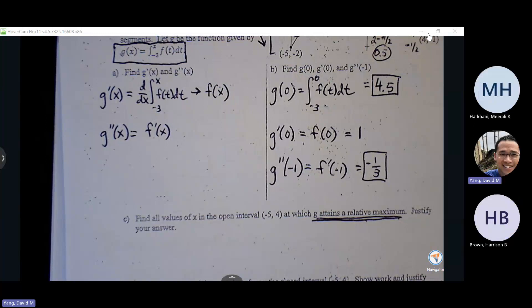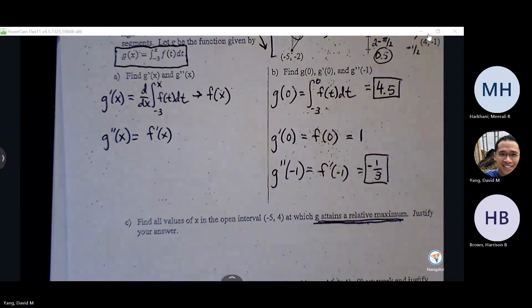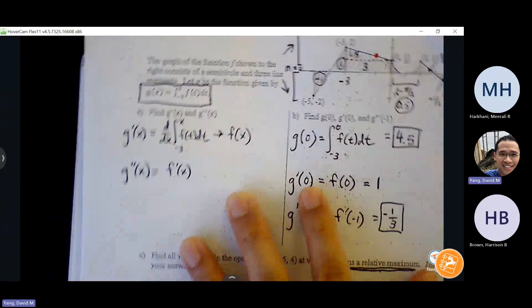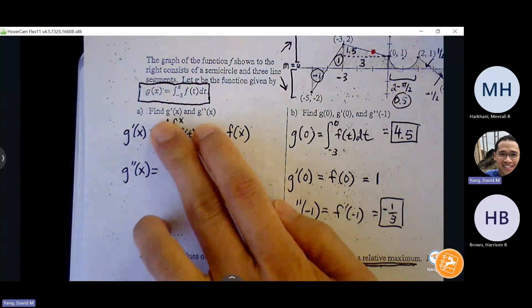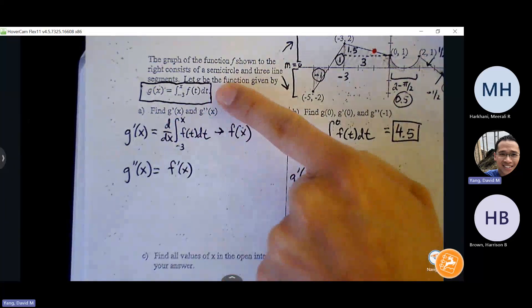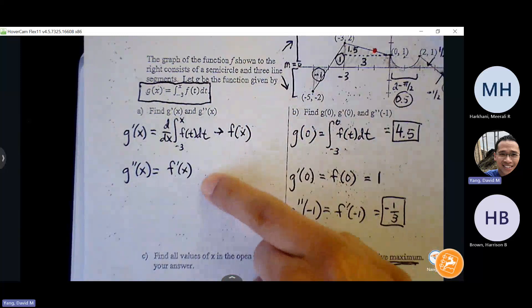This one you don't really need a calculator for. You're just building out your three definitions that you need. You need a definition for G, you need a definition for G prime, and you need a definition for G double prime.